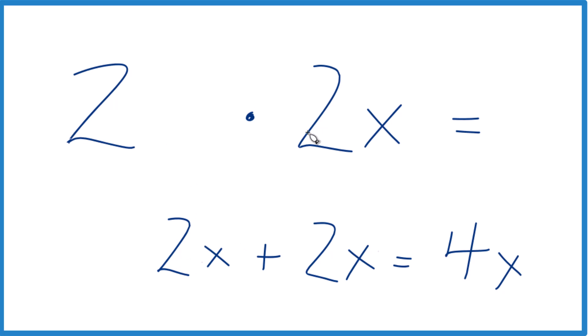So 2 times 2x, that gives us 4x. But we wanted 2x times 2x. Let's do that.